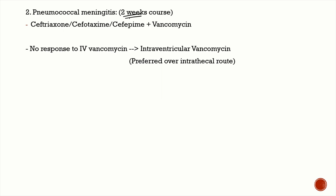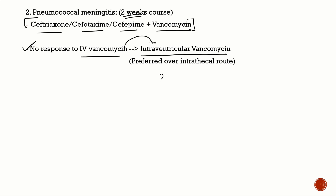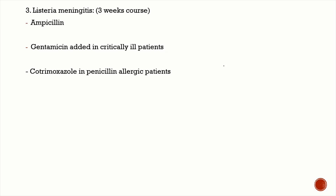For pneumococcal meningitis, give antibiotics for two weeks: ceftriaxone, cefotaxime, or cefepime plus vancomycin. If there is no response to IV vancomycin, give intraventricular vancomycin at 20 mg once daily; intraventricular route is preferred over intrathecal.